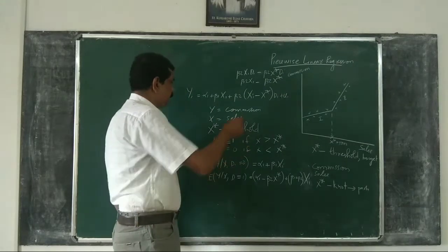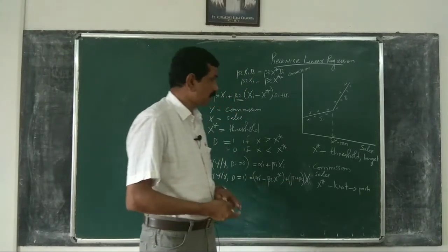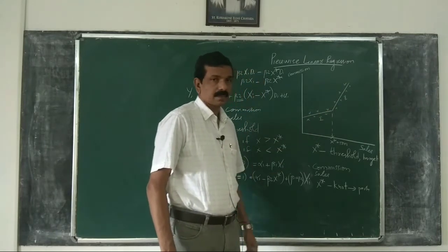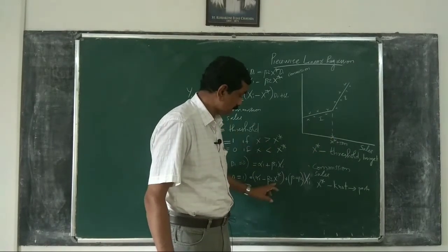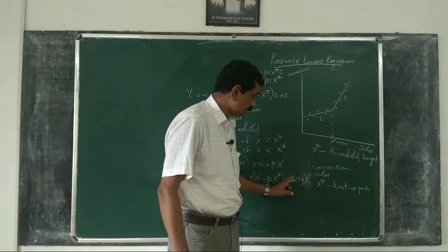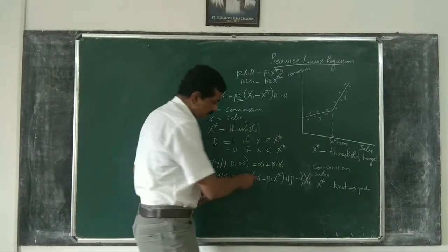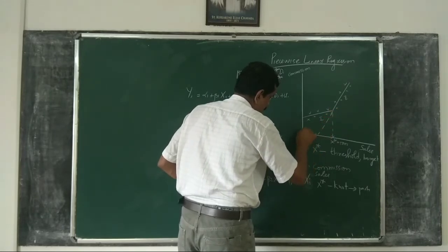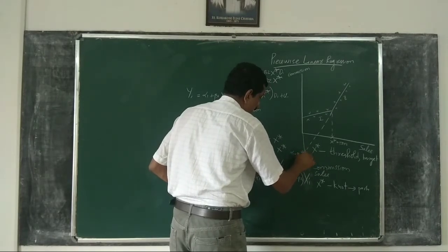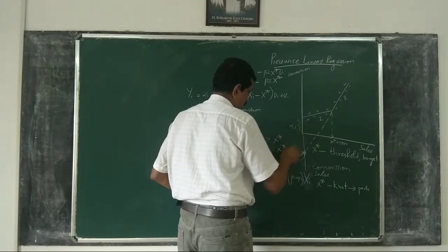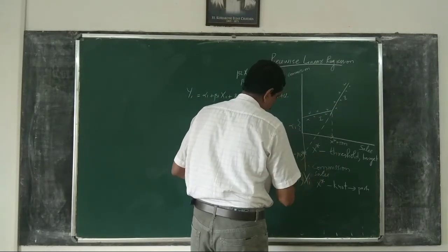We run this regression and if β2 is significant, we are testing whether there is a difference in slope up to x* and beyond x*. If β2 is significant, the slope of the regression after x* is β1 + β2. Below x*, it is only β1. The intercept below x* is α1, and the intercept of the second segment is α1 − β2·x*, with slope β1 + β2.